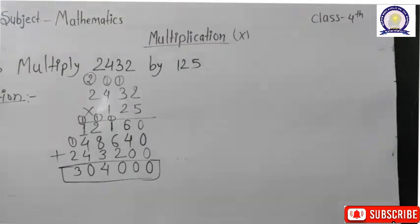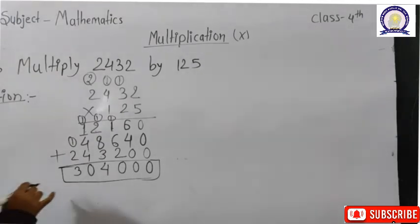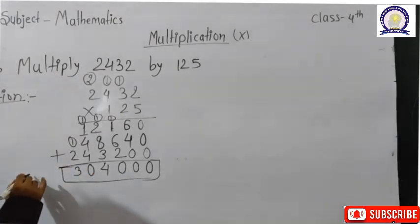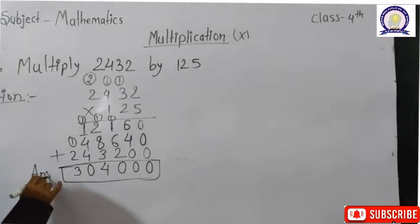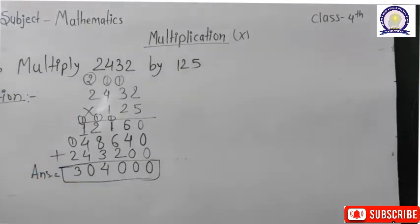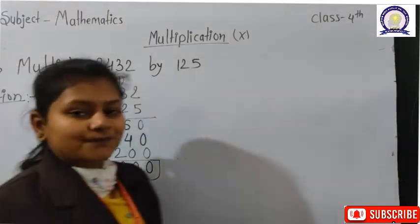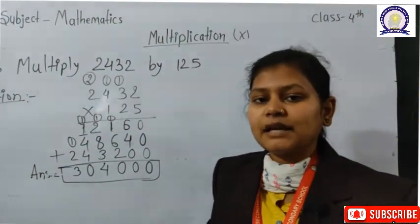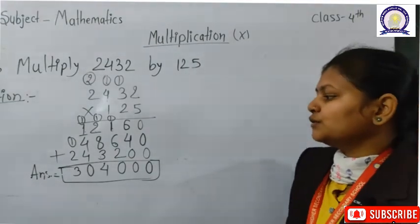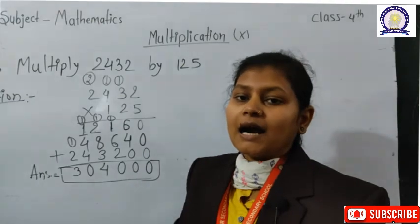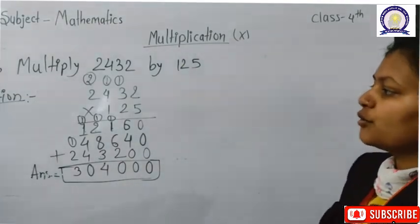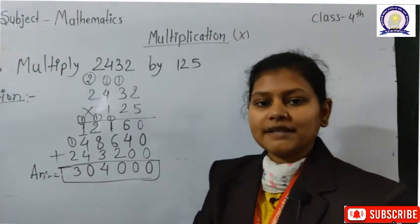Now we add all the partial answers together: 0+0=0; 6+4=10→0 carry 1; 6+2+1=9; carry through → 8+2=10+3=13→14, carry 1; 5; 4+4=8+1=9; then 10→0 carry 1; 2+1=3. So the final answer is 3,04,000 — this is your answer.